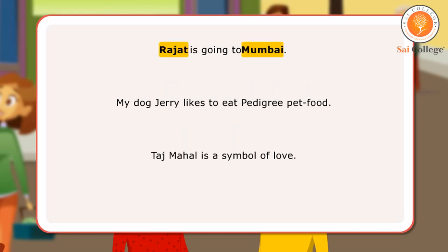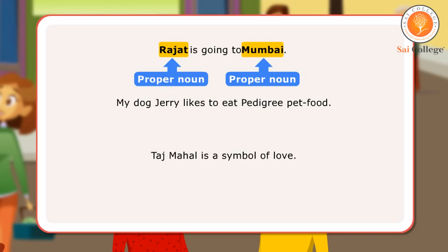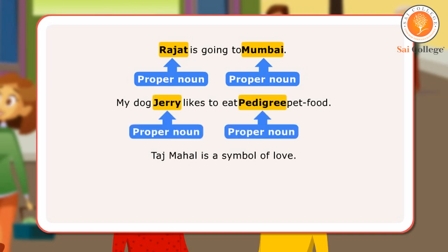In the first sentence, Rajat and Mumbai are proper nouns as they are specific names of a person and place respectively. In the next sentence, Jerry and Pedigree are proper nouns as these refer to the name of a particular dog and a particular brand of dog food. In the third sentence, Taj Mahal is a proper noun as it is the name of a specific monument.